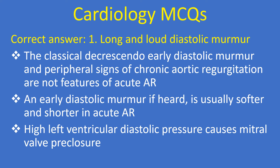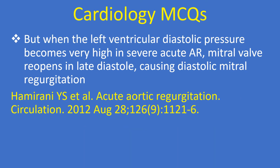The classical decrescendo early diastolic murmur and peripheral signs of chronic aortic regurgitation are not features of acute AR. An early diastolic murmur, if heard, is usually softer and shorter in acute AR. High left ventricular diastolic pressure causes mitral valve pre-closure. When the left ventricular diastolic pressure becomes very high in severe acute AR, the mitral valve re-opens in late diastole causing diastolic mitral regurgitation.